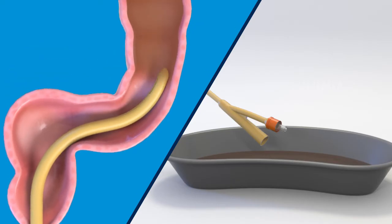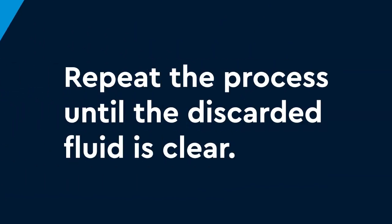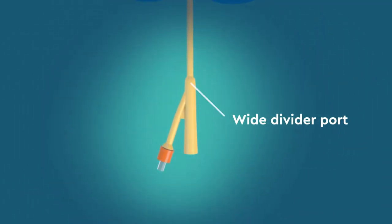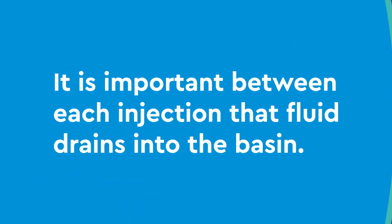Advance the catheter about one inch and repeat the process until the discarded fluid is clear. Do not advance the catheter further than the wide divider port. It is important between each injection that fluid drains into the basin.